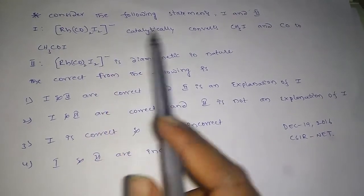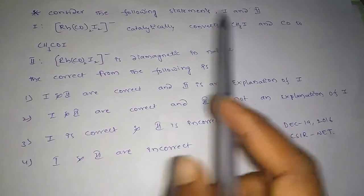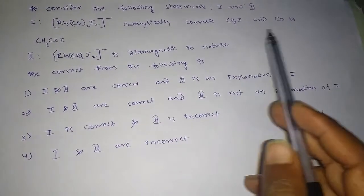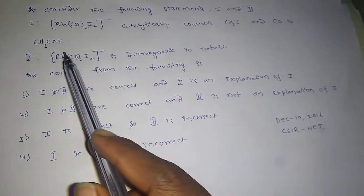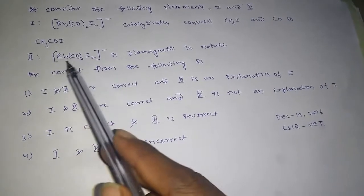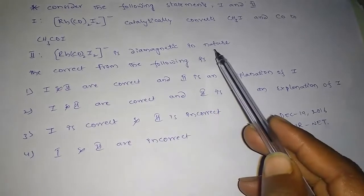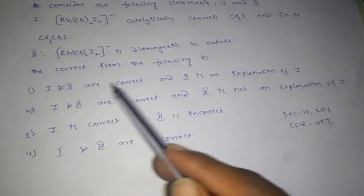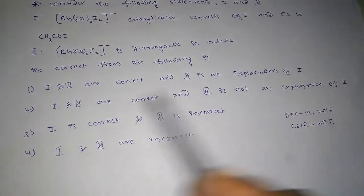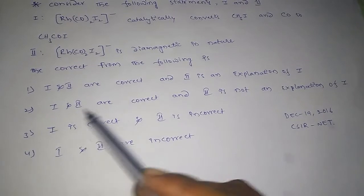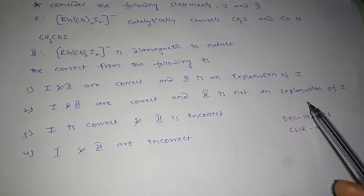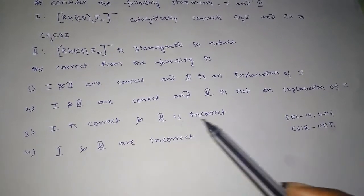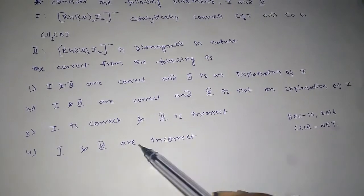The question is: consider the following statements 1 and 2. Statement 1: this rhodium complex catalytically converts methyl iodide and carbon monoxide to methyl carbonyl iodide. Statement 2: this rhodium complex is diamagnetic in nature. The options are: (1) both 1 and 2 are correct and 2 is an explanation of 1; (2) 1 and 2 are correct and 2 is not an explanation of 1; (3) 1 is correct and 2 is incorrect; (4) 1 and 2 are both incorrect.